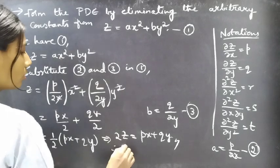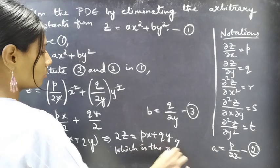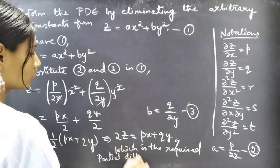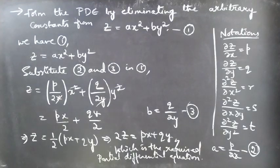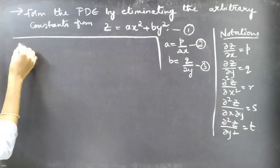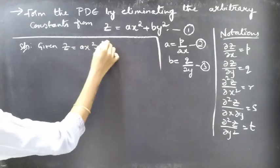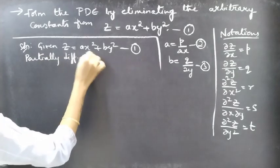Therefore, 2z = px + qy is the required partial differential equation. Now let's see the shortcut, just by reducing the number of steps while finding the partial derivatives of equation 1 with respect to x and y. We are given z = ax² + by² — consider this as equation 1. Now partially differentiate equation 1 with respect to x.